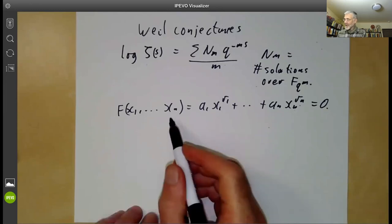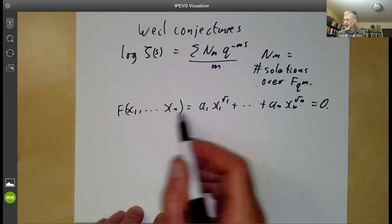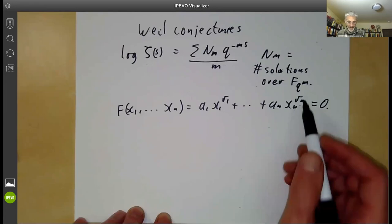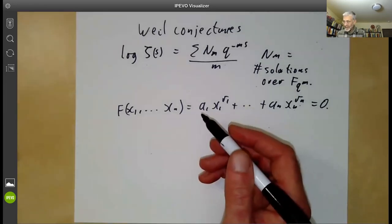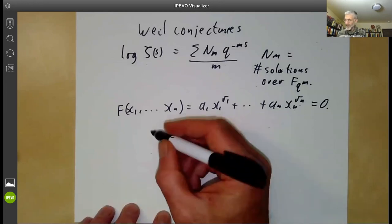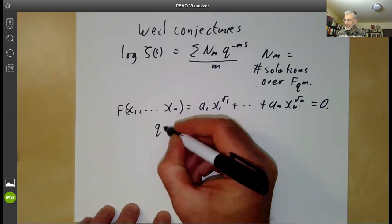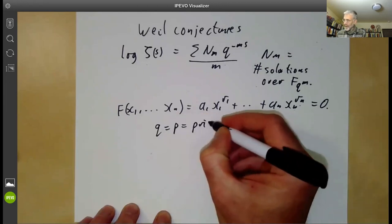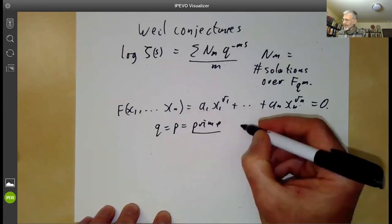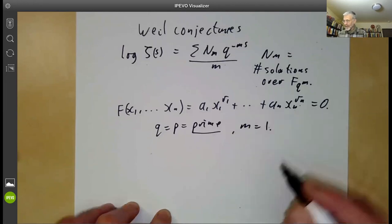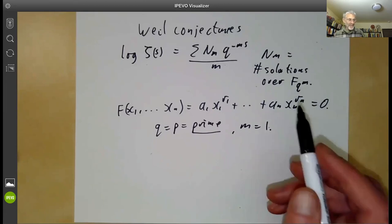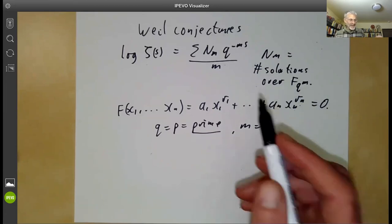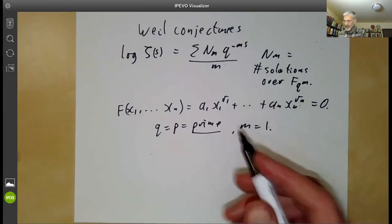Weil calculated the number of solutions to this equation over various finite fields. We'll do a slightly simplified special case of Weil's calculation to give the idea. In particular, we're going to take q = p to be prime and m = 1, so we're just looking at finite fields of prime order. The case of prime power order is similar but has a few extra complications.